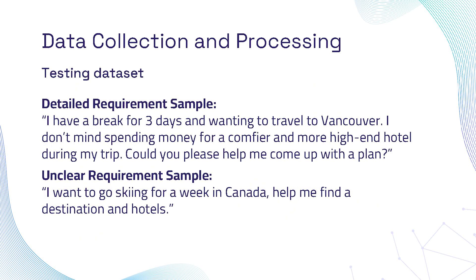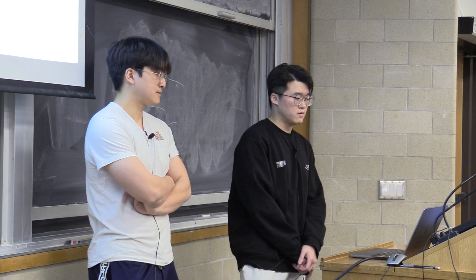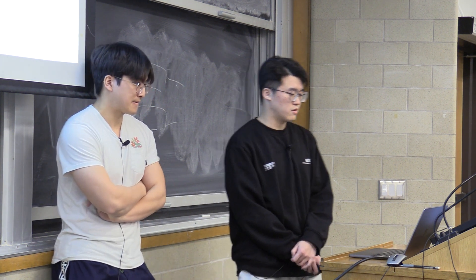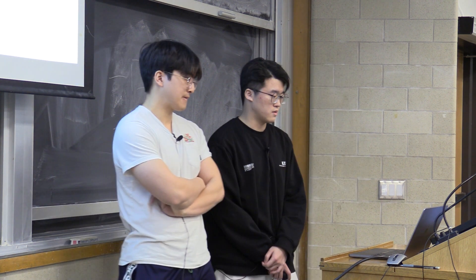This is how user input looks like. These two samples are from our testing dataset. One of them is detailed, which includes the length of the trip, the destination, and the budget. The other one is unclear and ambiguous. Our system performs very well in either case. In today's presentation, we will pick the hardest one, which is the ambiguous one, as our example.